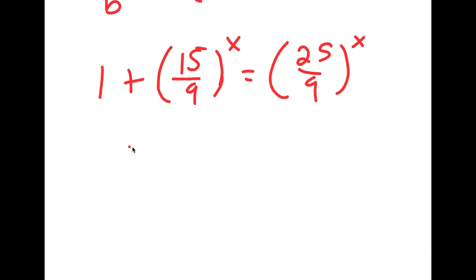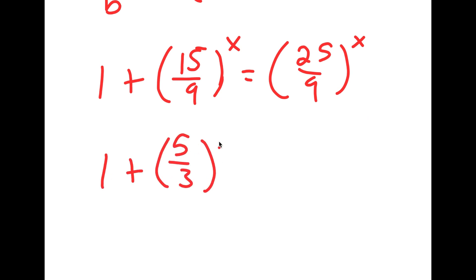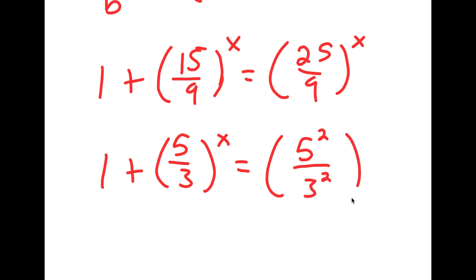Now 15 over 9 simplifies to 5 over 3, and 25 over 9 simplifies to 5 squared over 3 squared.